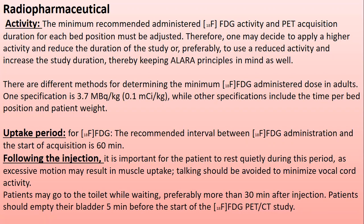The recommended interval between FDG administration and the start of acquisition is 60 minutes. After injection, the patient should rest quietly, as excessive motion may result in muscle uptake. Talking should be avoided to minimize vocal cord activity. The patient may go to the toilet while waiting, preferably more than 30 minutes after injection, and should empty their bladder five minutes before starting the study.